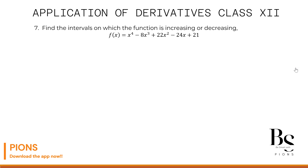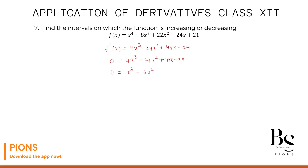Question 7: find the intervals on which the function f(x) = x⁴ - 8x³ + 22x² - 24x + 21 is increasing or decreasing. Differentiating: f'(x) = 4x³ - 24x² + 44x - 24. Setting equal to 0 and dividing by 4 gives x³ - 6x² + 11x - 6 = 0.